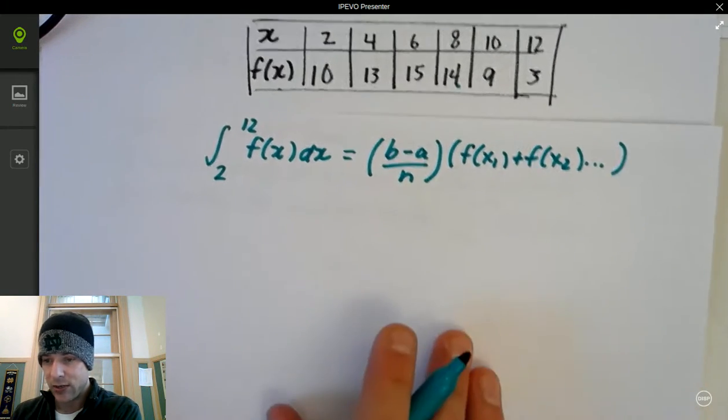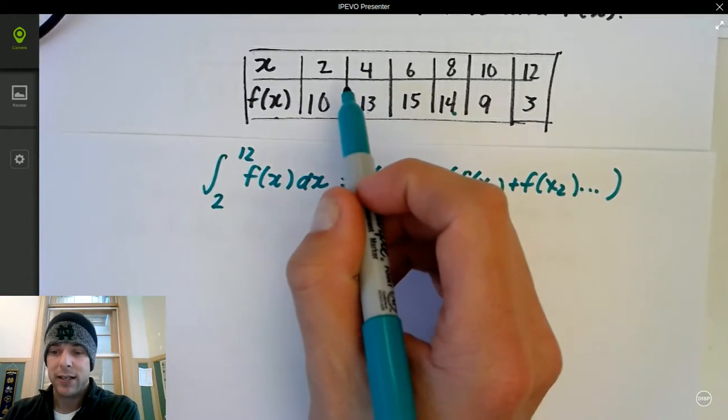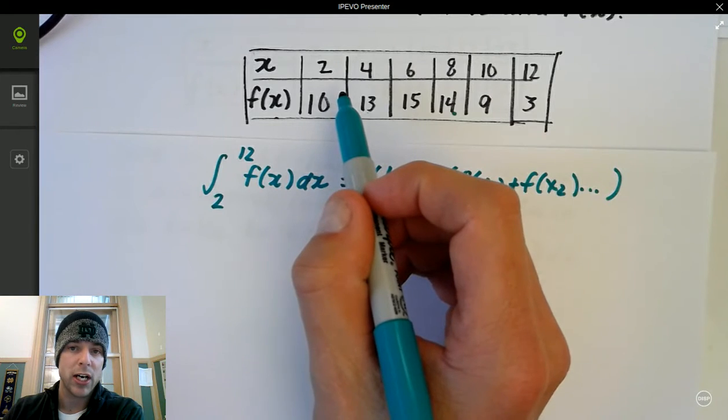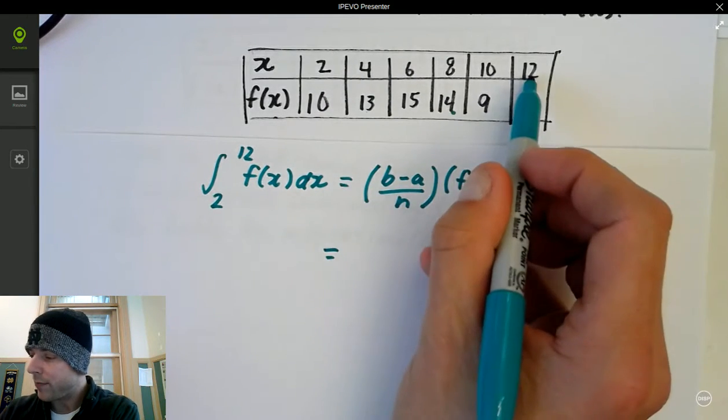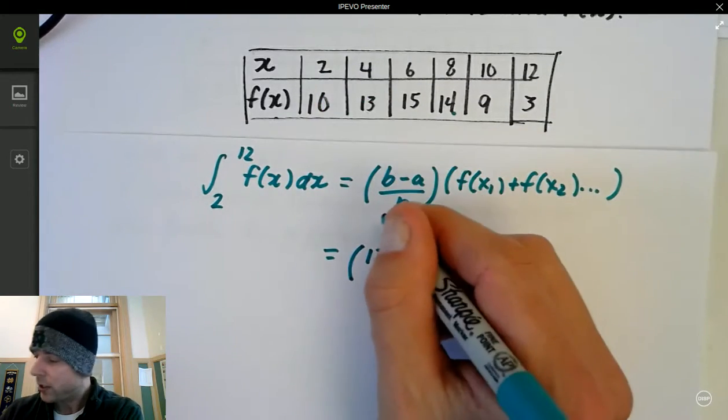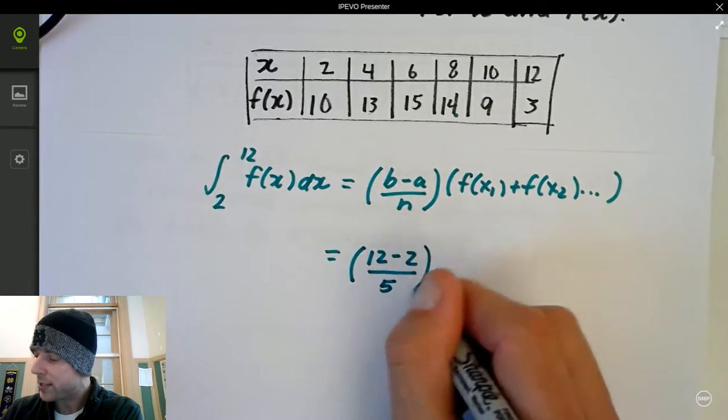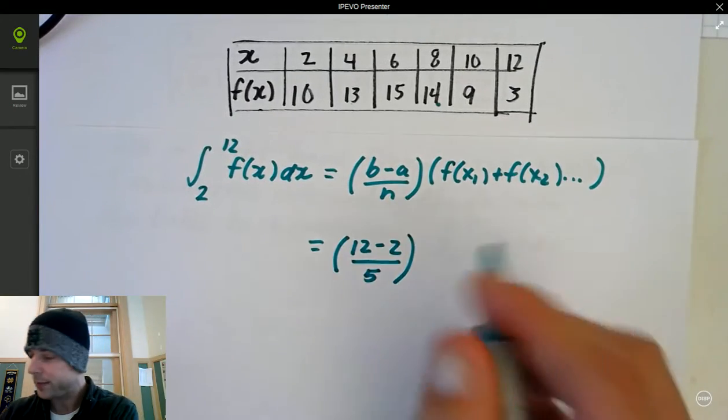So when I look at this and I do this, I know that each rectangle is 2. That's b minus a over n. But let's write it. You'd have b, which is 12, minus a, which is 2, over your subintervals. They said 5 subintervals using the right Riemann sum, and that's where 2 is going to come from.